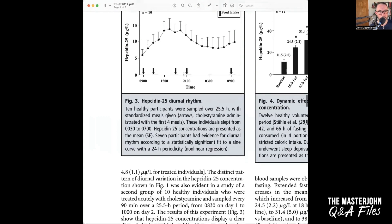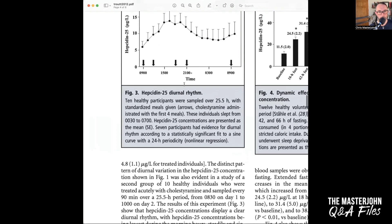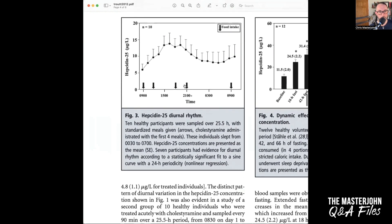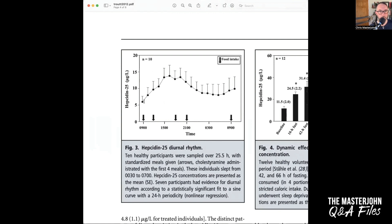This is ten healthy participants with standardized meals with cholestyramine administered with the first four meals to prevent iron absorption. And here you have more people and they're kind of trying to mitigate the meal effect and you see a two to threefold rise between morning and afternoon continuing across till around 9 p.m.